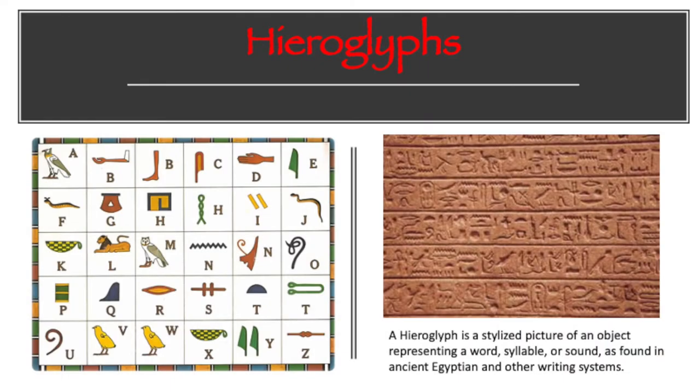Hieroglyphs or hieroglyphics. A hieroglyph is a stylized picture of an object representing a word, syllable, or sound as found in ancient Egyptian and other writing systems.